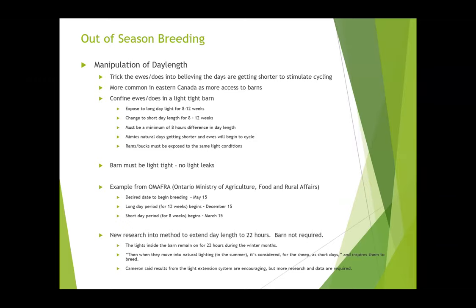Manipulation of day length — basically you're convincing the sheep that it's fall, even though it's not, and that the days are getting shorter even though they're actually getting longer since June is the longest day of the year. The original method requires an absolutely light-tight barn — you cannot have any leaks of light because it does not require very much light to stimulate the pineal gland in the sheep. Even the amount of light that would come through barn or wall fans is too much. This has never been very popular in Western Canada because most of us don't have those types of barns. It's more common in Eastern Canada where they house their sheep and have more access to barns they can make work for this.